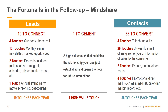DTD — Do the Database Twice. Every quarter you should be talking to every single person in your database. Does that sound overwhelming? No — 100 people a week, 20 people a day. How hard is it to talk to your database? It's not. Twelve touches monthly: an email, a newsletter, a market report, or a video. Two touches by direct mail such as an agent calendar or printed marketing material. One touch a year: an event, a party, a movie screening, a get-together.